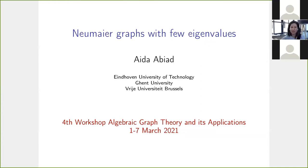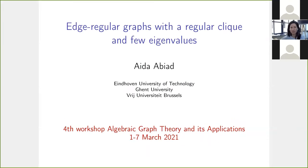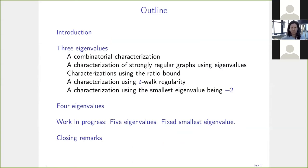My talk is about Neumeier graphs having fewer eigenvalues. If you've never heard what a Neumeier graph is, don't worry, because they are just edge-regular graphs having a regular clique. I will look at when these graphs have fewer eigenvalues. This is joint work with some people from Belgium and some people from China — I will mention the names whenever I introduce the results.